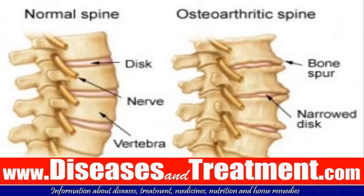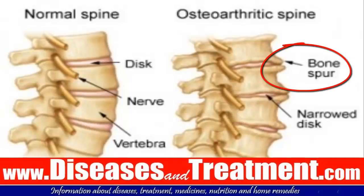Osteophytes, also known as bone spurs or bone lumps, are bone spurs that grow on the bones of the spine or around the joints. They often form next to joints affected by osteoarthritis, which is a condition that causes joints to become painful and stiff. Osteophytes can grow from any bone, but they are most often found in the neck, shoulder, knee, lower back, fingers, toes, foot, or heel.